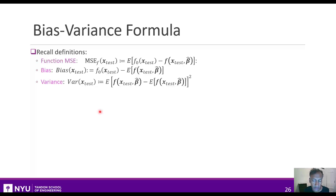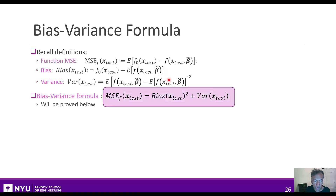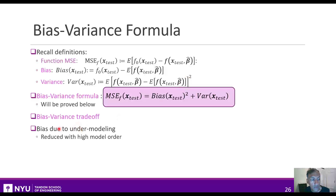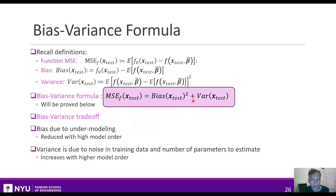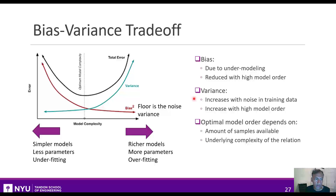This trade-off is captured by the bias-variance formula. The function MSE is the difference between the true and estimated functions. The bias is the average of that difference, and the variance is the spread around that average. The bias-variance formula states that the function MSE equals the sum of bias squared and variance squared. The bias is due to under-modeling and is reduced by increasing the model order, but increasing the model order tends to increase the variance.